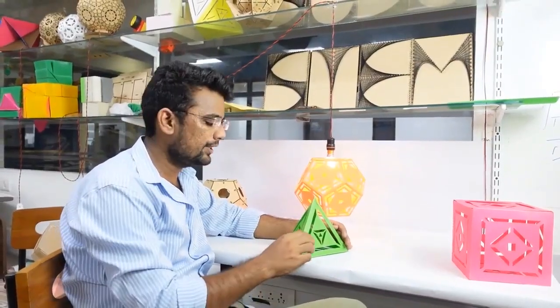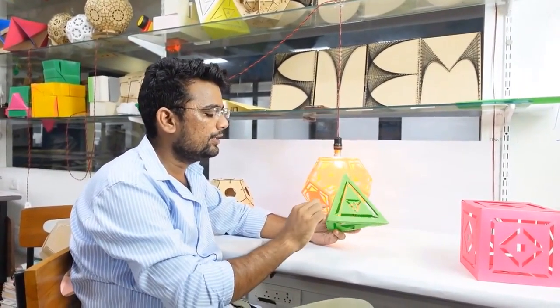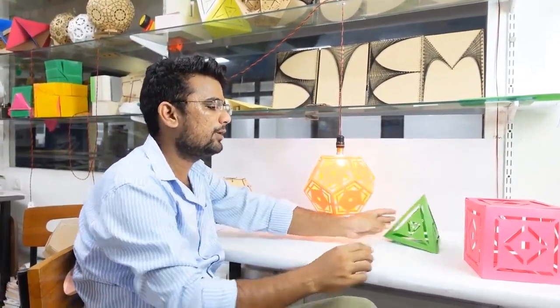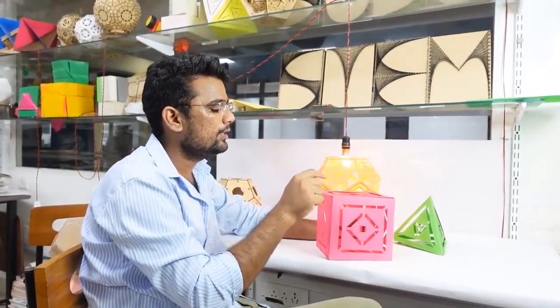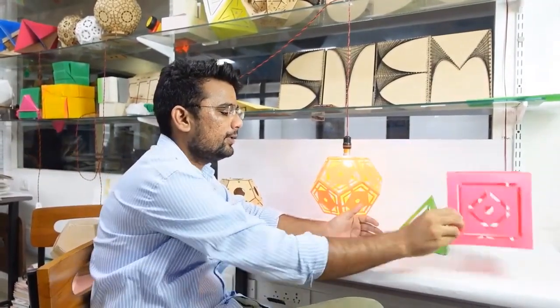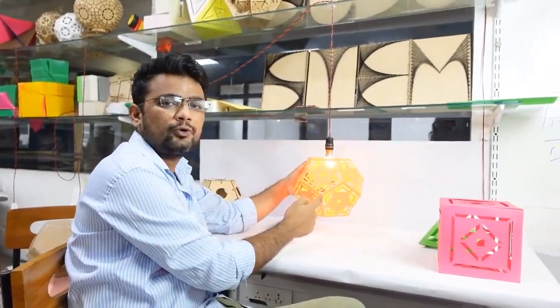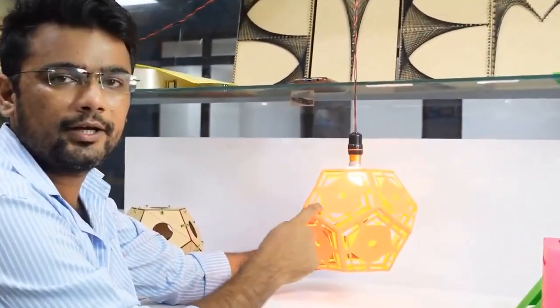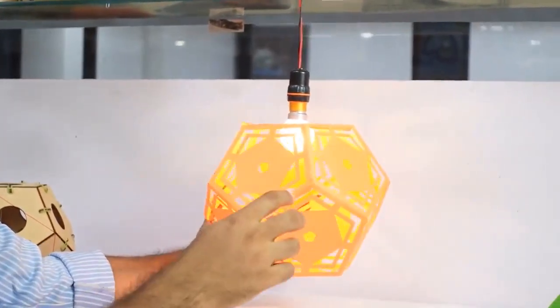We started making lamps with the tetrahedron, in which three triangles meet at every vertex. Then we made this cube, where three squares meet at every vertex. Today we have made this dodecahedron, in which three pentagons meet at each vertex. You can see this on every vertex of the dodecahedron.